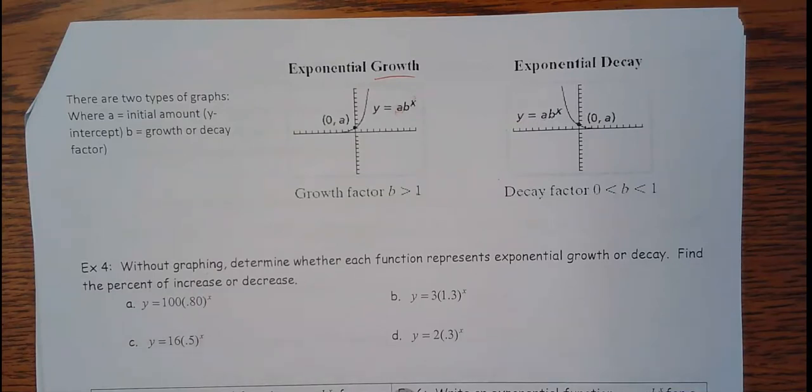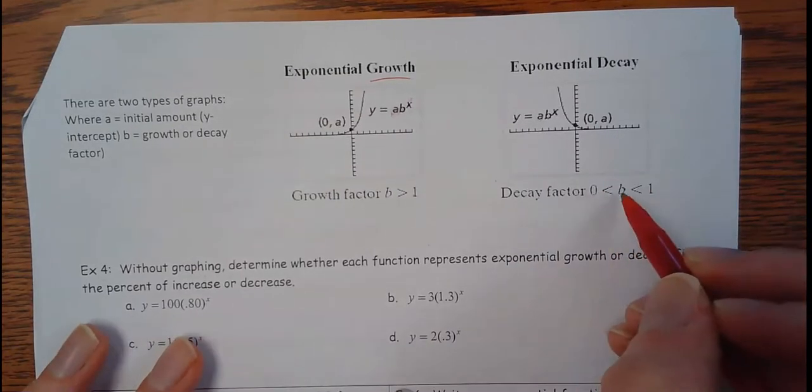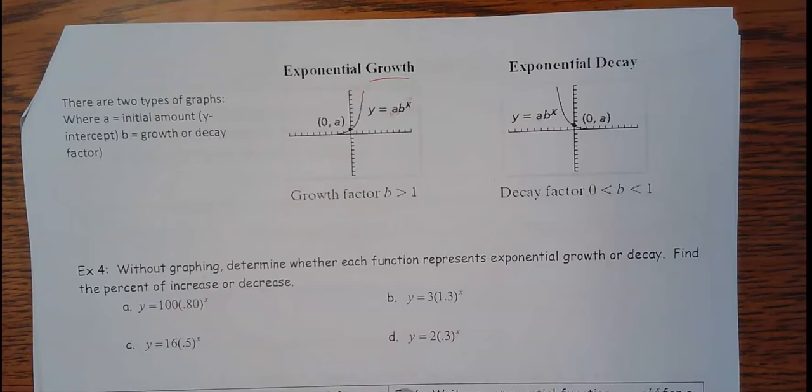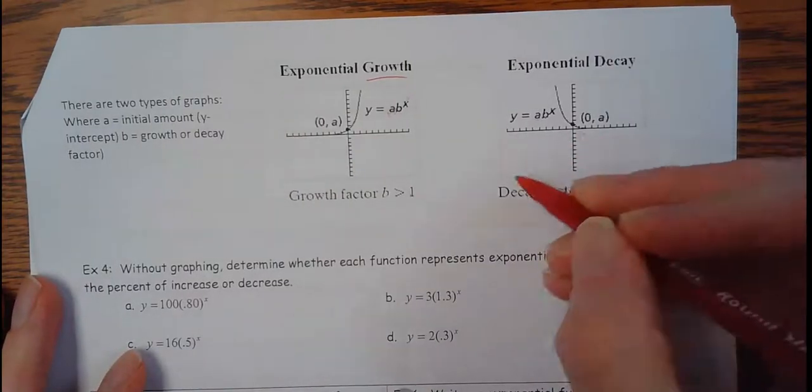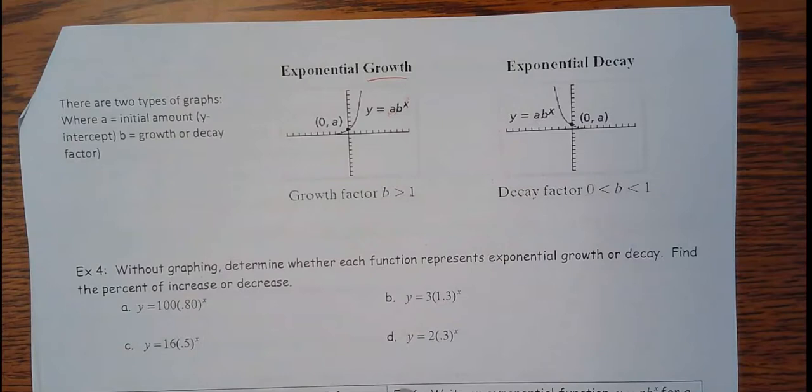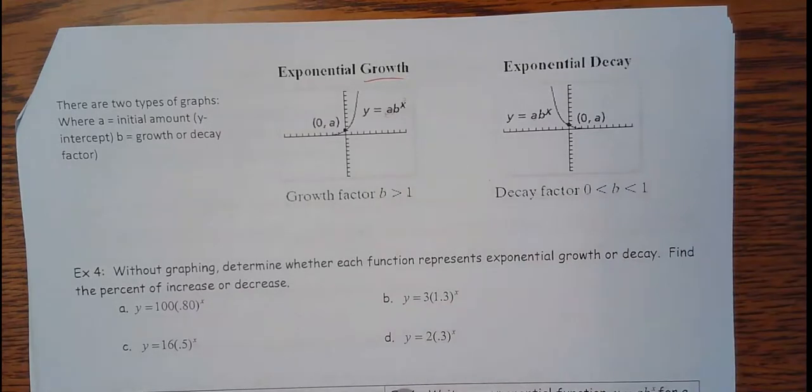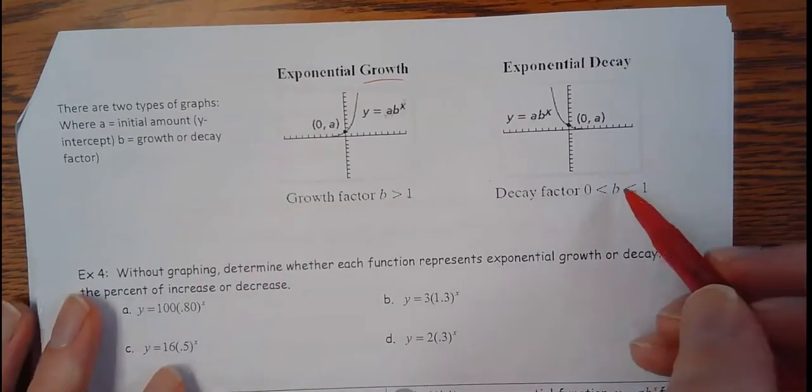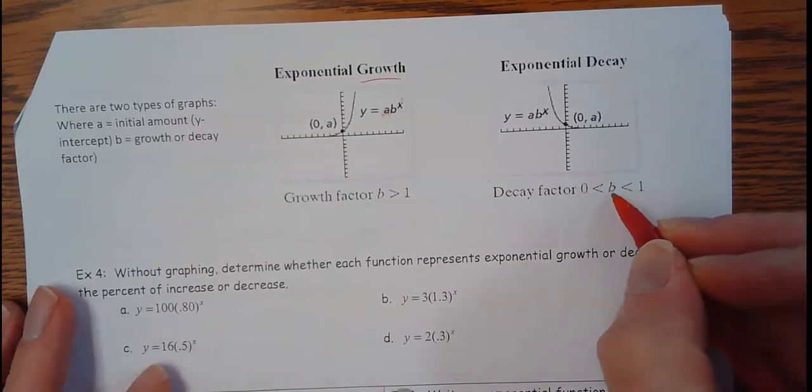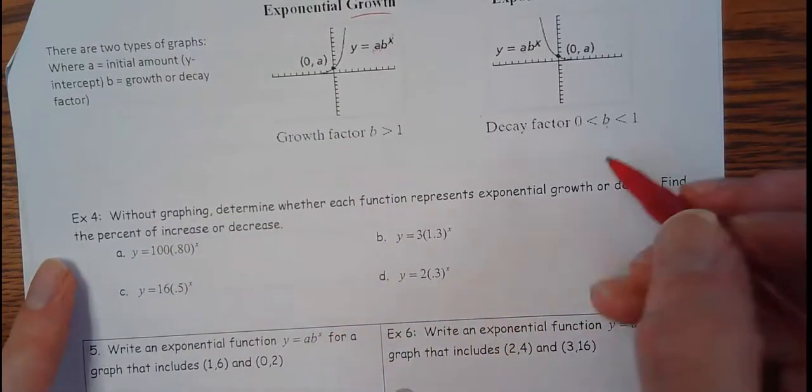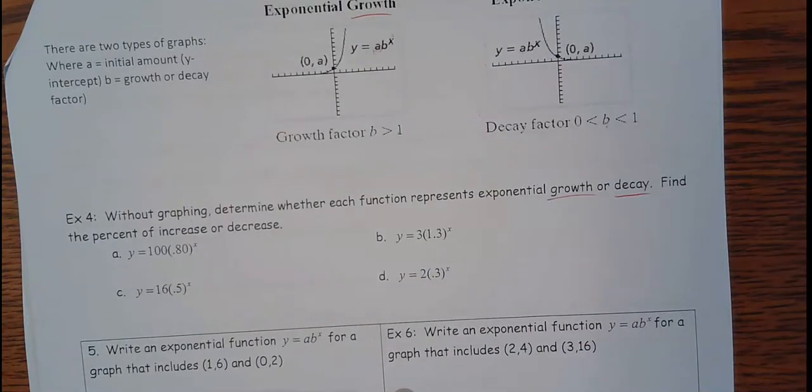When you think of linear growth, it means something's being added every time. When we think of exponential growth, something's being multiplied every time. And this decay is if b is between 0 and 1. Now, if b is negative, that's a whole different story. We don't really do anything with b being negative. It ends up being upside down. And it doesn't have as many life applications. It can be graphed, but it's not really applicable to real life situations. So basically, if b is a fraction, that means you're getting a little bit of what you had previously.